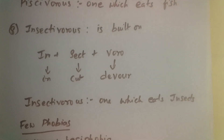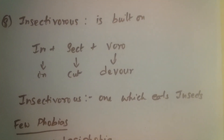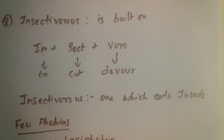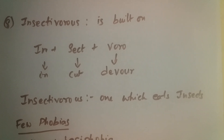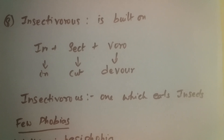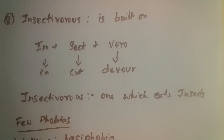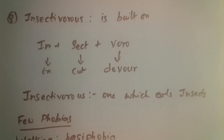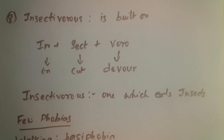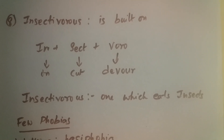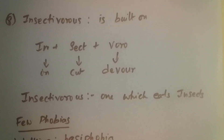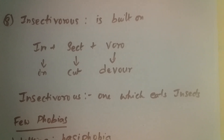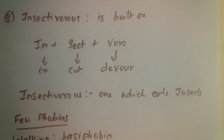Insectivorous is built on 'in' plus 'sect' plus 'oro.' Insect is built on 'in' plus 'sect' — 'sect' means to cut, 'in' means in. If you observe an insect, we see that the body looks like it is cut in. Hence it is called insect. So insectivorous refers to those animals which eat insects.